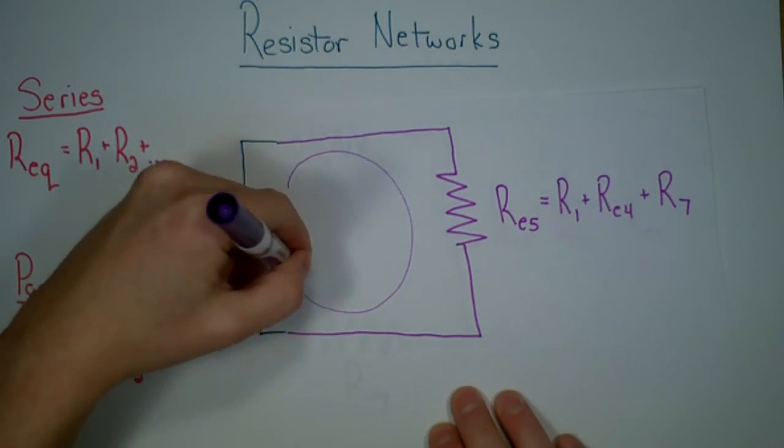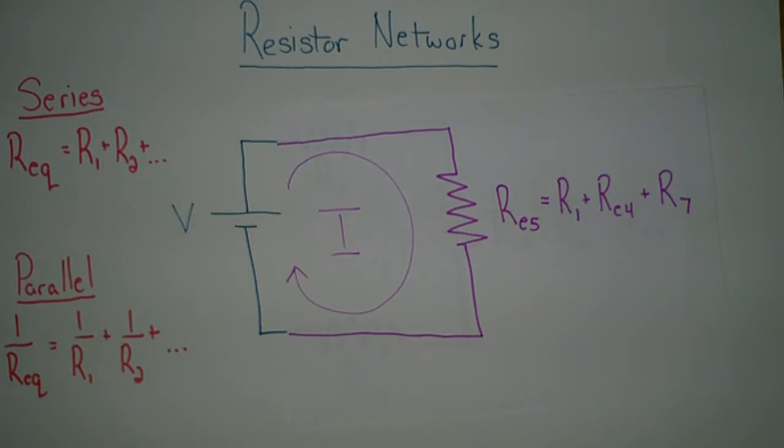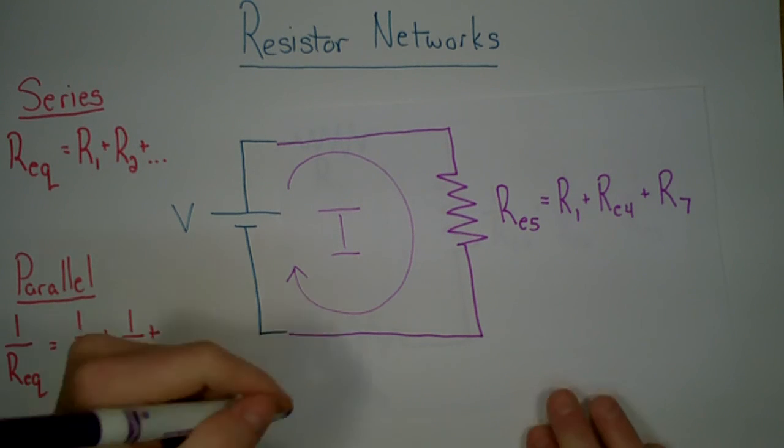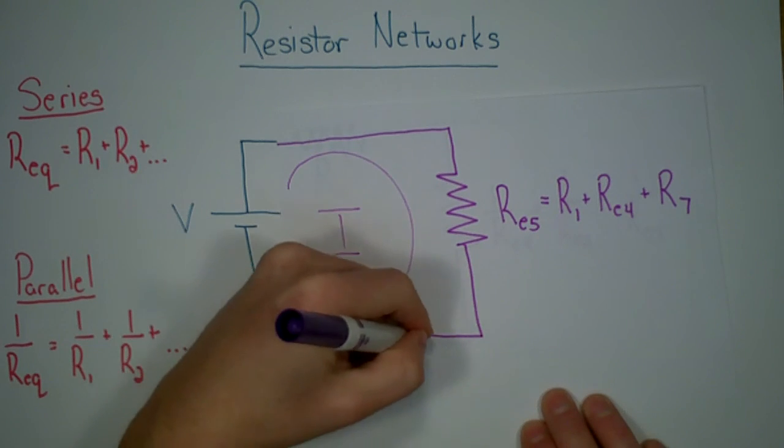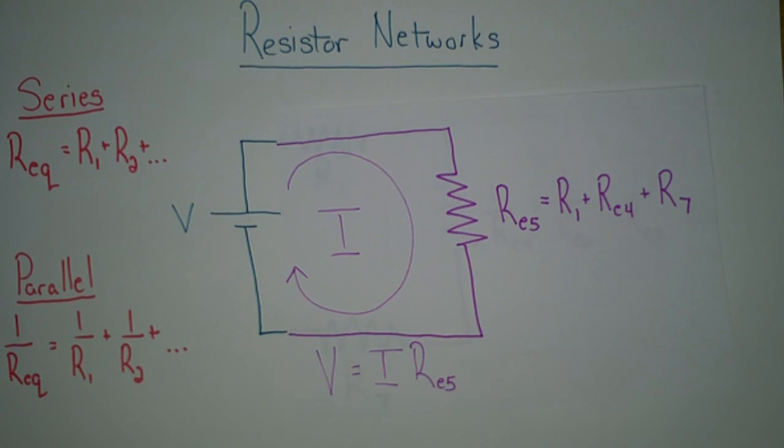We can now use Ohm's Law to find the current. The current in the circuit can be found using V equals IR, and the resistor we're going to use is RE5.